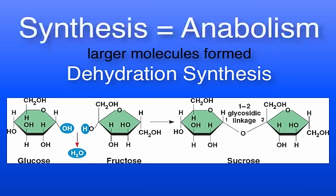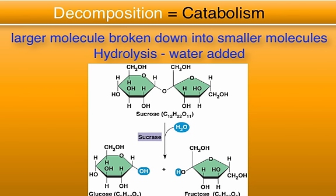A synthesis reaction is also called anabolism — chemical bonds are formed so that a larger molecule can be built from smaller molecules. One important example is dehydration synthesis, where hydrogen and hydroxide are removed from fructose and glucose, both monomers called monosaccharides, to form sucrose, a polymer called a disaccharide. A decomposition reaction is called catabolism — chemical bonds are broken so that a larger molecule is broken down into smaller molecules. One important example is hydrolysis, where water is added to sucrose, breaking bonds and forming two products: fructose and glucose, both smaller molecules.